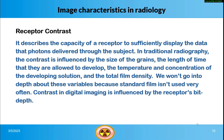Receptor contrast describes the capacity of a receptor to sufficiently display the data that photons delivered through the subject. In traditional radiography, contrast is influenced by the size of the grains, the length of time they are allowed to develop, the temperature and concentration of the developing solution, and the total film density. Standard film is not used very often today. Contrast in digital imaging is influenced by the receptor's bit depth.